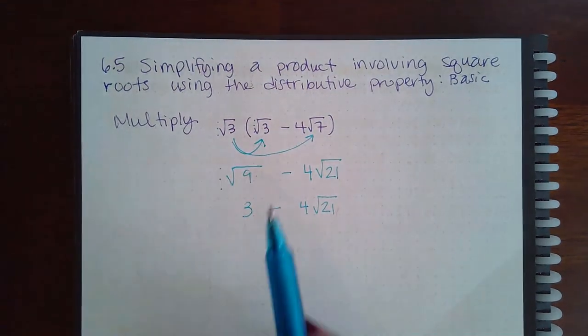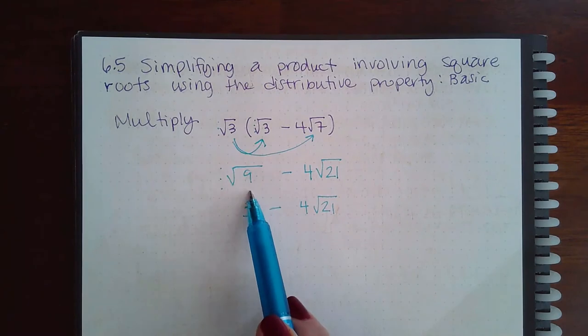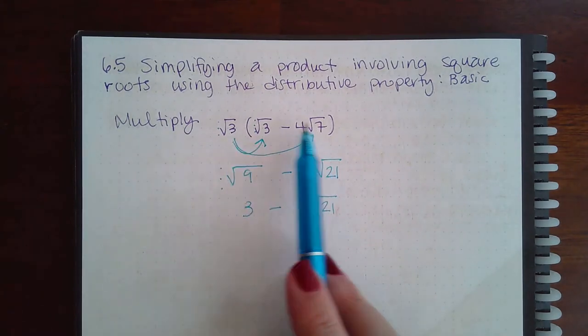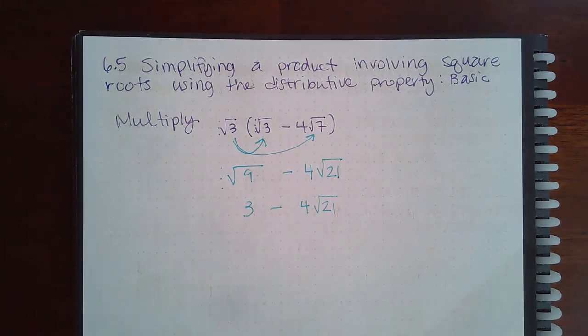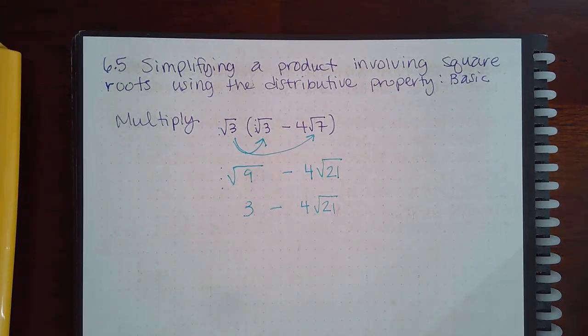Now these two terms: outside times outside is 4, inside times inside is where we got 21. So for each product, you're doing outside times outsides, inside times insides, and then simplifying the radicals at the end if possible.